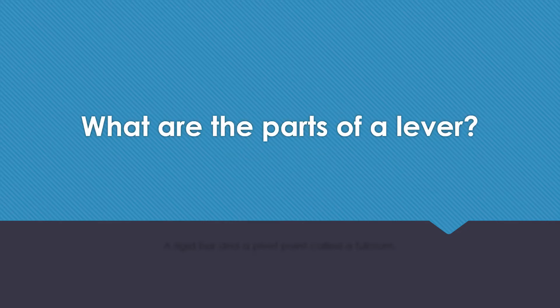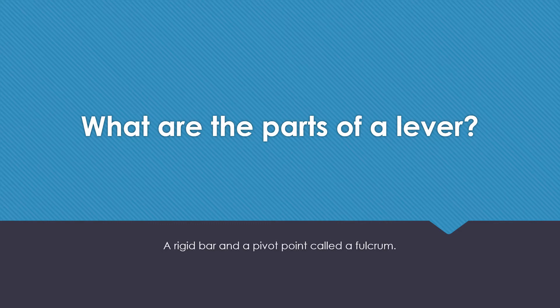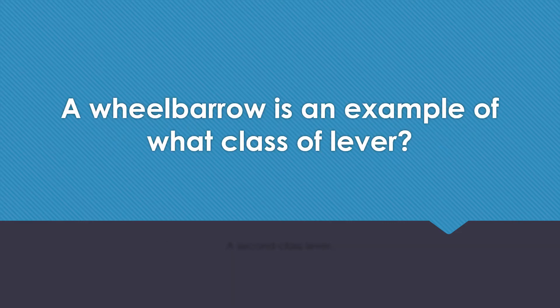What are the parts of a lever? A rigid bar and a pivot point, often called a fulcrum. A wheelbarrow is an example of what class of lever? A second class lever.